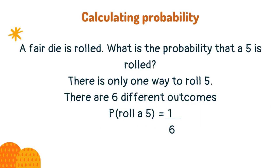A fair die is rolled. What is the probability that a 5 is rolled? There is only one way to roll a 5. There are 6 different outcomes.